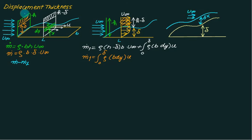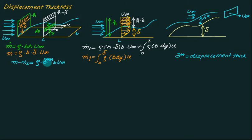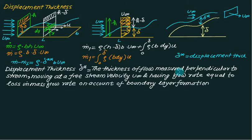The displacement thickness δ* lies outside the boundary layer where the velocity is constant at u-infinity. Its cross-section is δ* times b, giving a mass flow rate of rho times δ* times b times u-infinity. This thickness is measured perpendicular to the direction of flow and has a flow rate equal to the loss in mass rate on account of boundary layer formation. The loss of mass is the difference between mass flow without and with the plate.